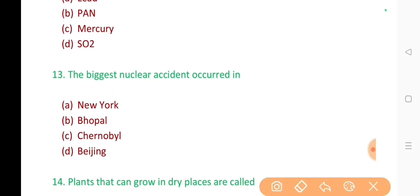13. The biggest nuclear accident occurred in? The correct answer is option C. Chernobyl.